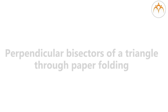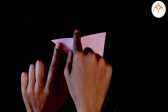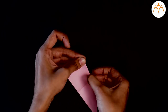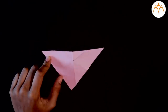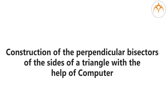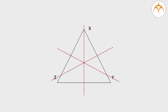Perpendicular bisectors of a triangle through paper folding: draw a triangle XYZ on a piece of paper. Match any two vertices at a time and get the perpendicular bisectors of all three sides; we get the point of concurrence C of all three perpendicular bisectors. Using a computer, draw a triangle XYZ, then draw a perpendicular line through the midpoint of each side. The perpendicular bisectors of all three sides intersect at a single point. GPS uses this construction to find places lying at an equal distance from a particular location.